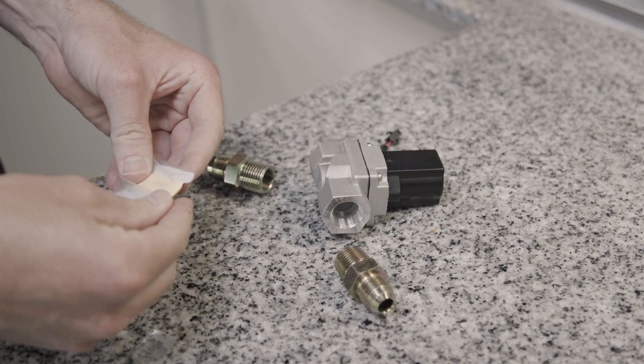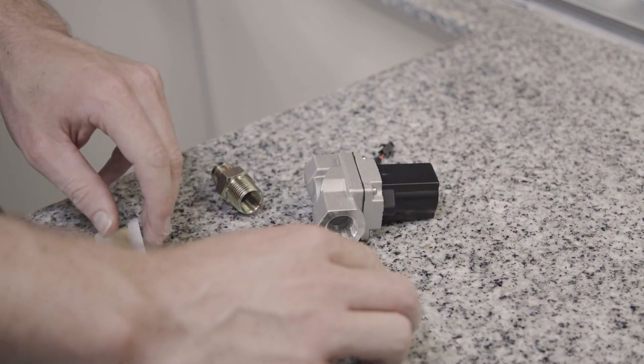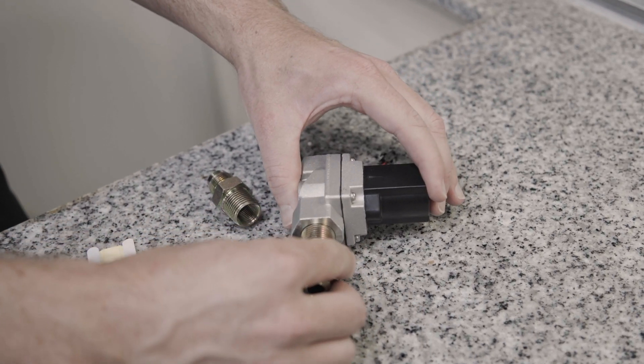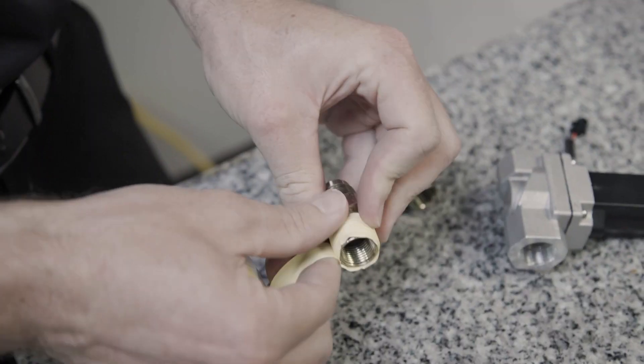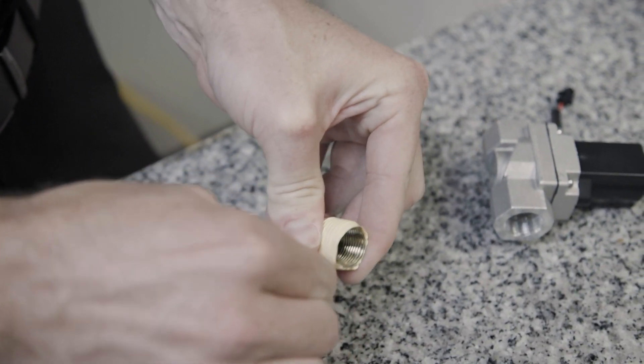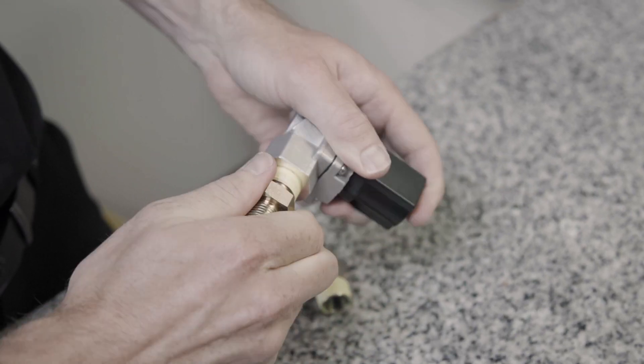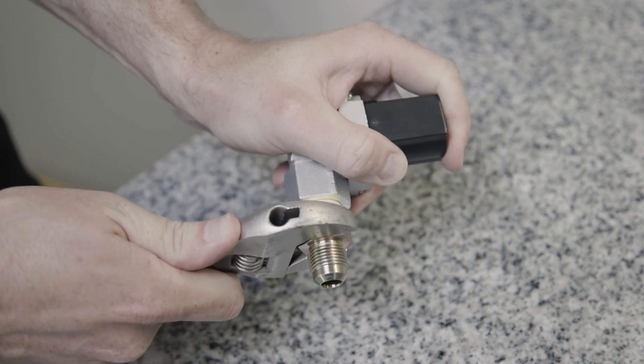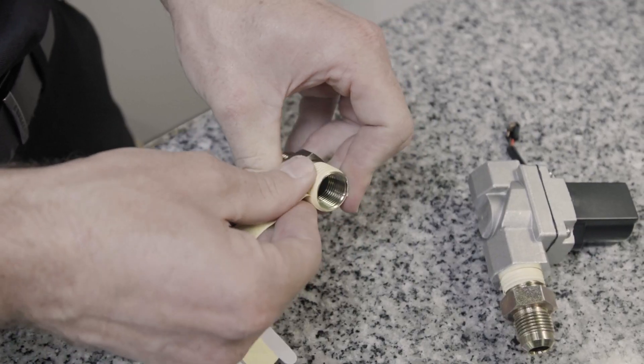Take the pipe sealant tape and apply that to both the ends of the adapters that are going to go into the solenoid. It's important to wrap this in the opposite direction in which you're going to thread it into the solenoid, just so that way the tape doesn't peel itself off.